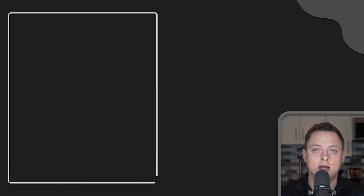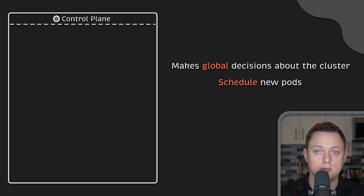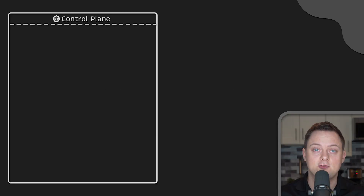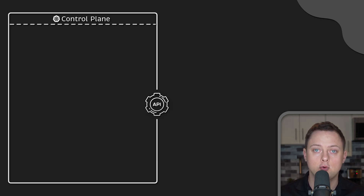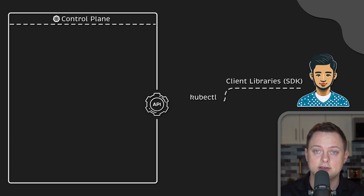Now let's take a look at the control plane components. In general, the control plane makes global decisions about the cluster — for example, it can schedule new pods, create a cloud load balancer to expose your application, and many other functions. At the front end, we have the kube-api server, a component that exposes the Kubernetes API. Users can access the Kubernetes API by using kubectl, client libraries, or by making REST API requests.